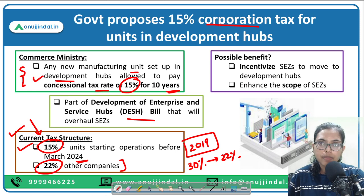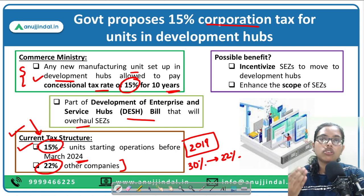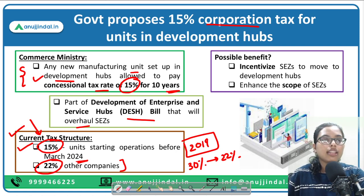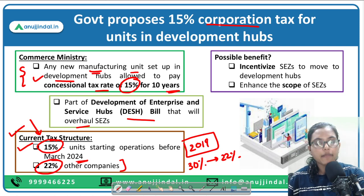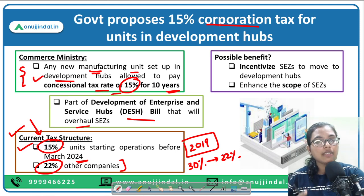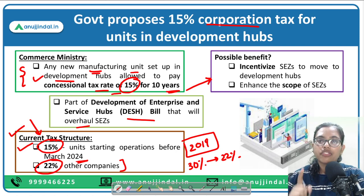The DESH Bill is basically meant to overhaul and revamp the SEZ Act — Special Economic Zones Act. Under the DESH Bill, any new manufacturing unit set up will be given concessional rates of tax, that is 15 percent, and that too for 10 years. The possible benefit of providing a concessional rate to development hubs is to incentivize existing SEZs to move to the new framework.